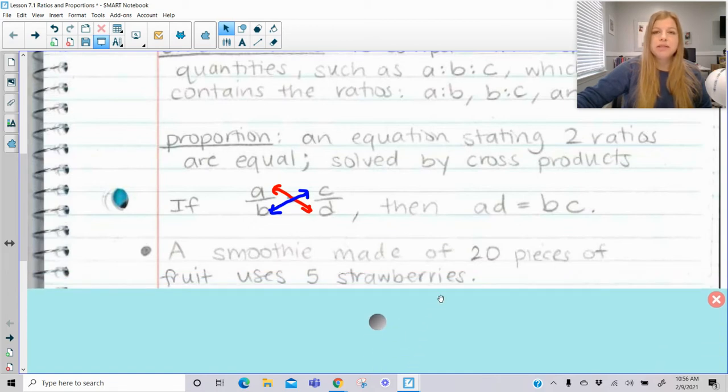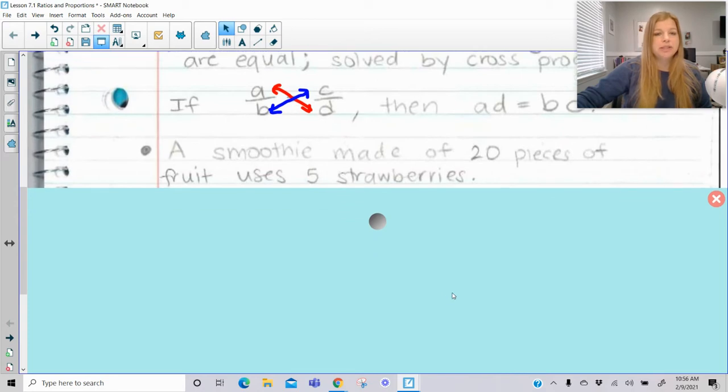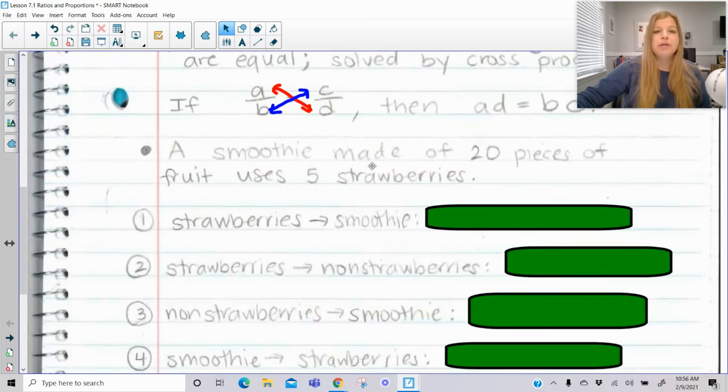Now let's write some ratios and make sure they're in simplest form. A smoothie made of 20 pieces of fruit uses 5 strawberries. We know the total amount of fruit is 20, and 5 of those pieces are strawberries. If I said write the ratio from strawberries to the smoothie, strawberries is 5, the amount of fruit in the smoothie is 20.